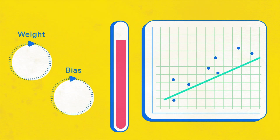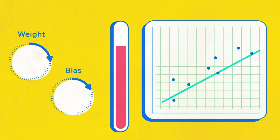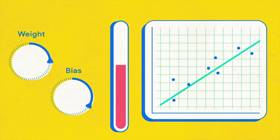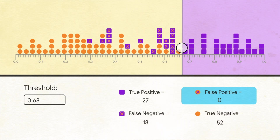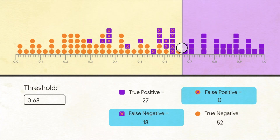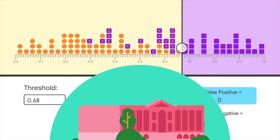Thus far, we've evaluated the performance of our models based on how they performed across all our examples. But sometimes, great overall performance doesn't tell the whole story. Let's take a look at one example.